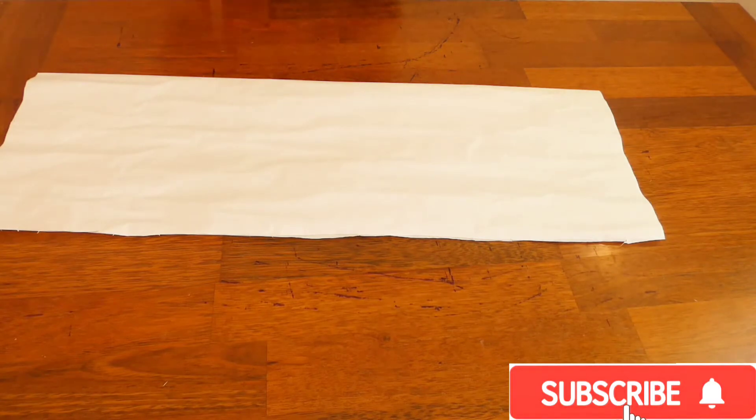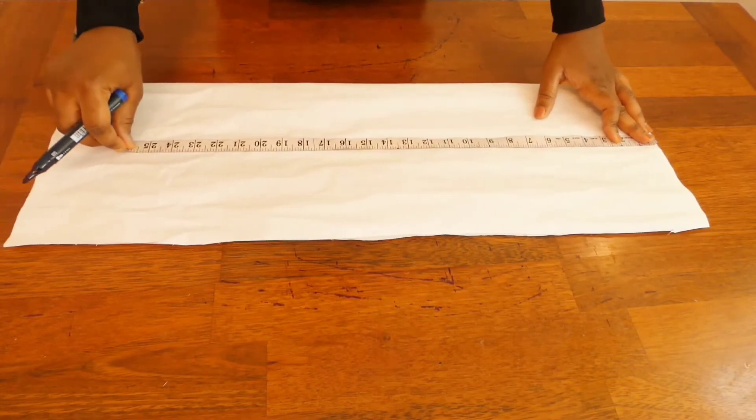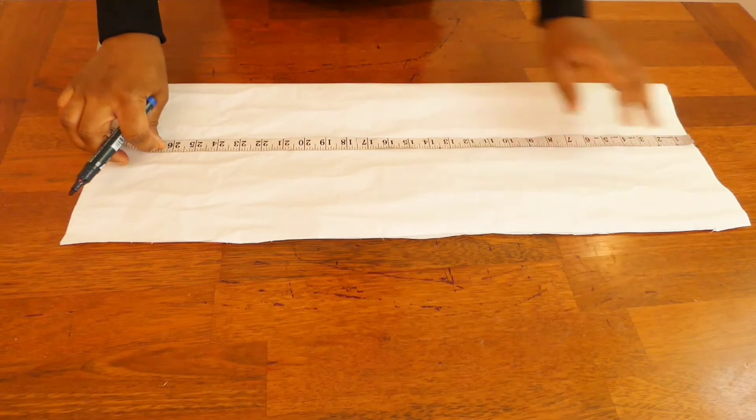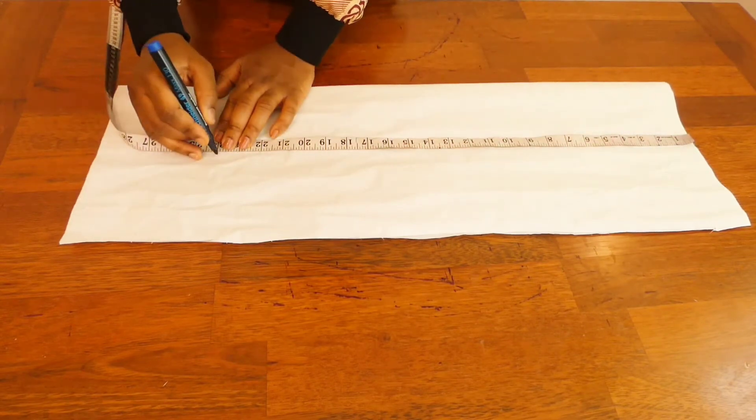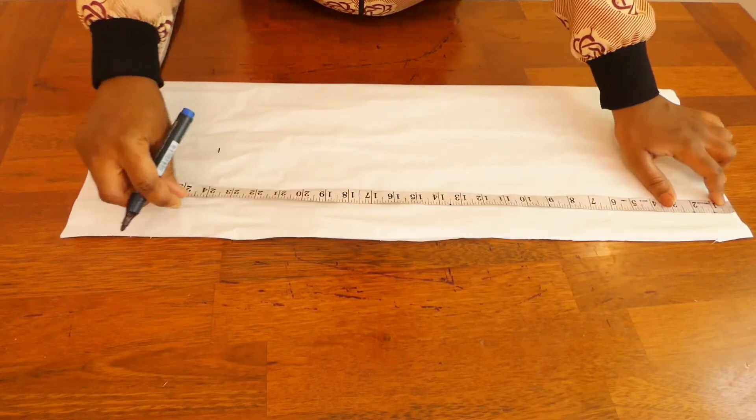So guys, the first thing we are going to be doing since we already have our measurement for our armhole is to mark all the basic points. I'm just going to be marking all the basic points. The full length is 24 inches, the full length of the sleeve, that's from the shoulder to the wrist.